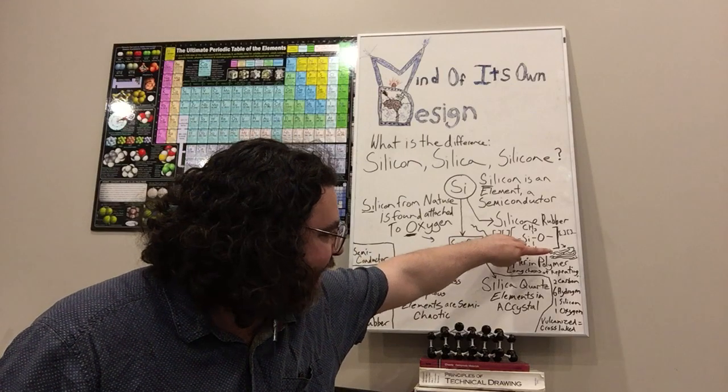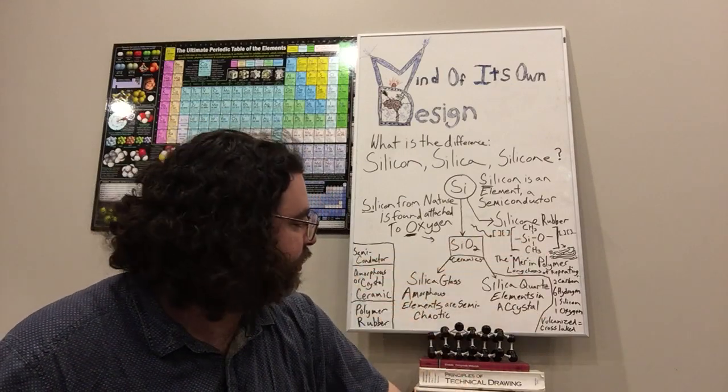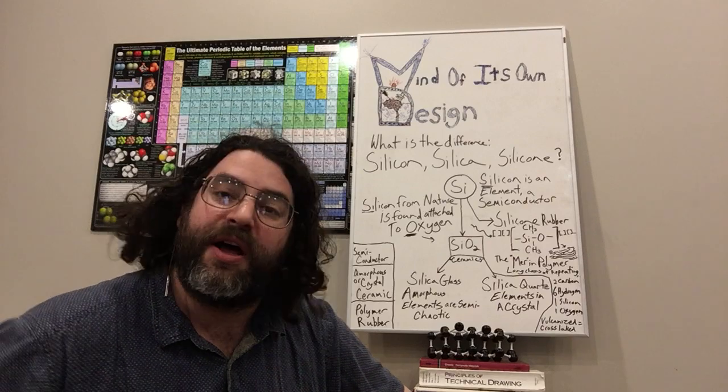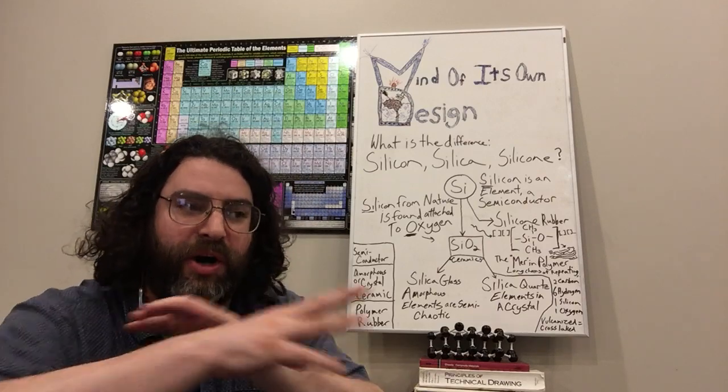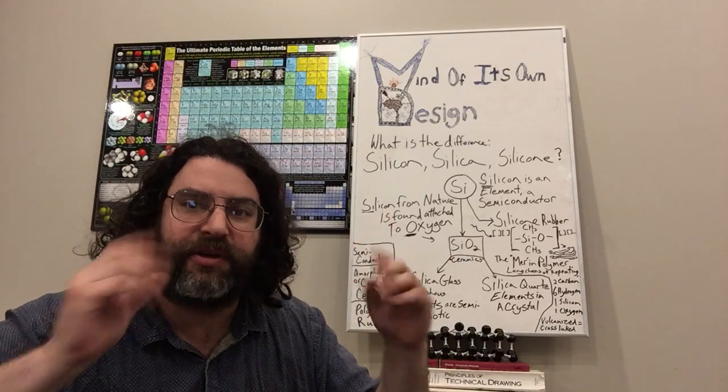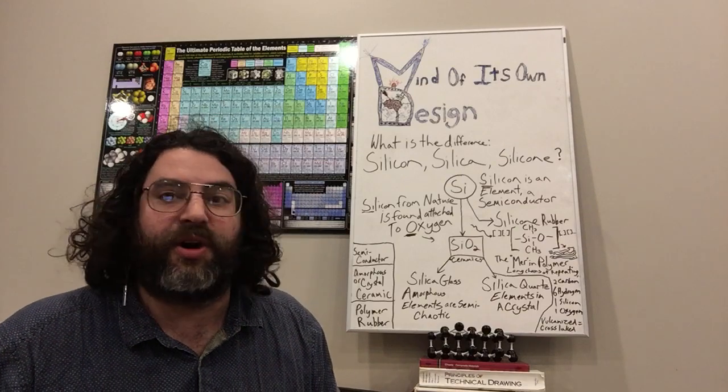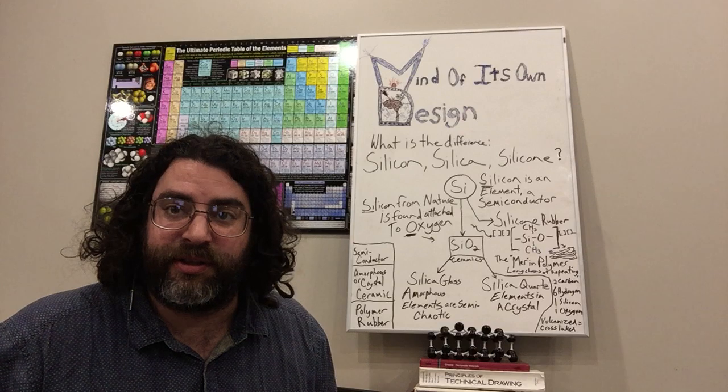But if you add sulfur, usually, or some other material that can link multiple long strands of this polymer, if they can be linked to each other in a couple spots, that's called cross-linking or sometimes called vulcanization.